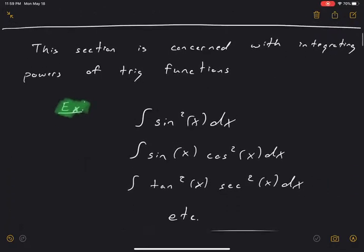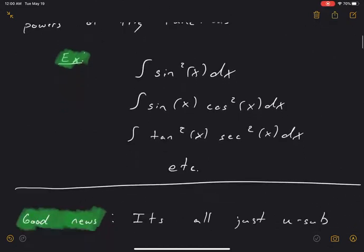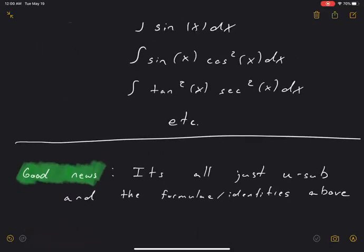So trig integrals — what are we talking about? We're talking about integrals of trig functions. So we might see something like the integral of sine squared of x dx, or the integral of sine of x times cosine squared, or integral of tangent squared, secant squared — those types of things. Pretty much everything we're going to see today is going to be like one trig function times another, maybe raised to some powers. The good news is it's basically all just u-sub and the identities we just saw.